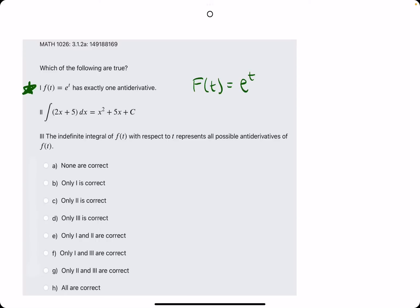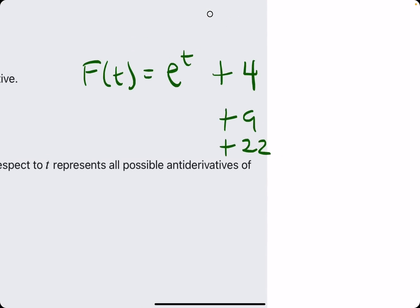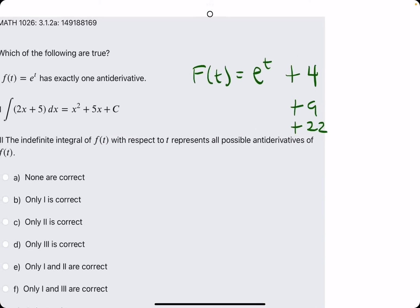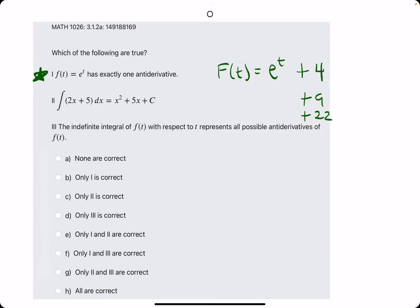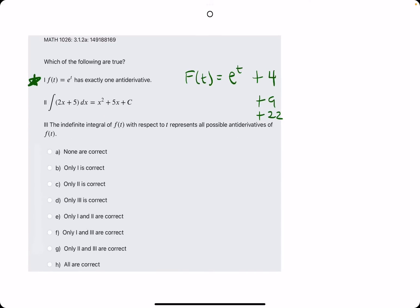However, the antiderivative could also have a plus C. It could have a constant, which means maybe that constant could be plus 7, maybe plus 4 or plus 9 or plus 22 or whatever. I think it's that constant that allows us to have more than one antiderivative. And so, I think this statement is false.